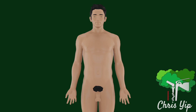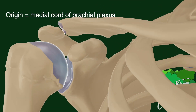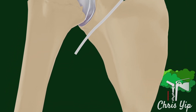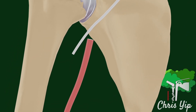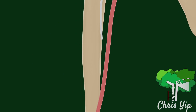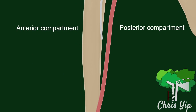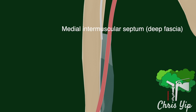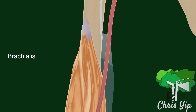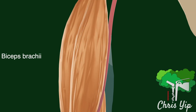The ulnar nerve begins as a continuation of the medial cord of the brachial plexus. Its initial path down the medial side of the humerus lies lateral to the brachial artery. Note that the arm can be divided into the anterior and posterior compartment, which is separated by the medial intermuscular septum. The anterior compartment contains the flexor muscles such as the brachialis and the biceps brachii.